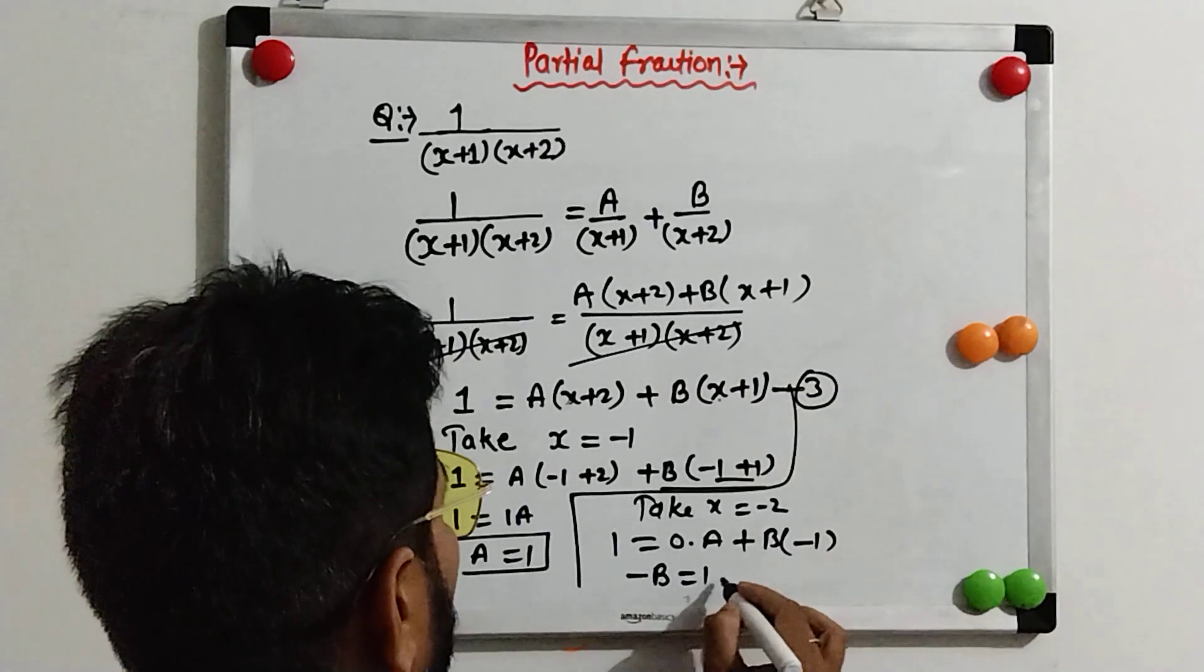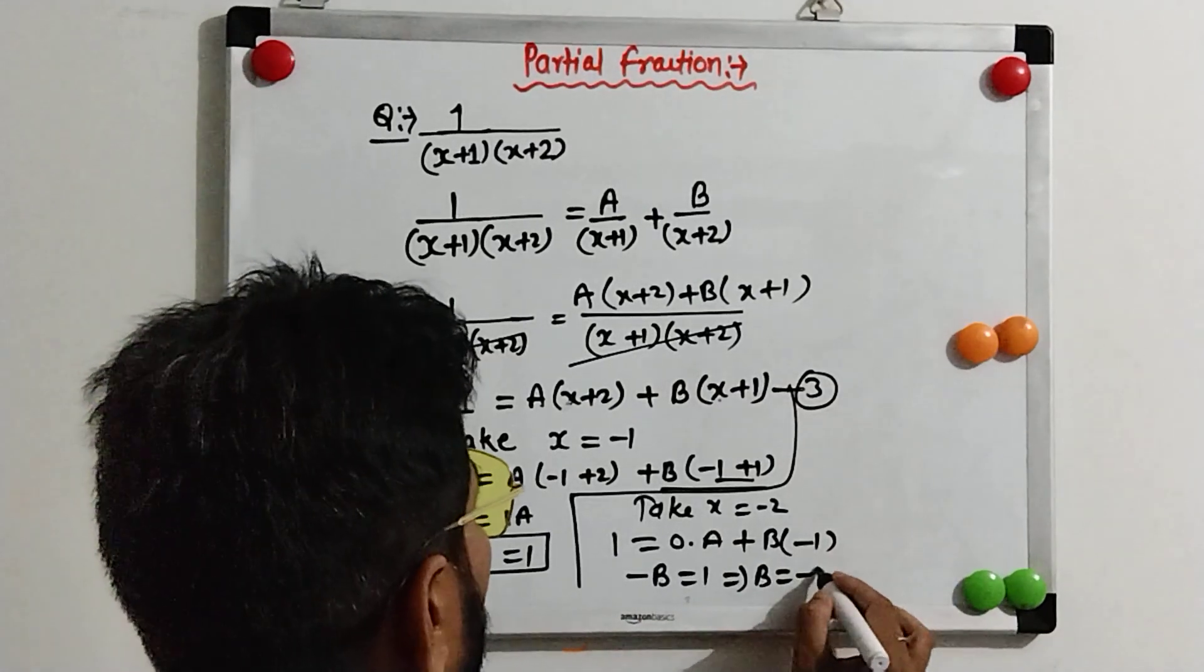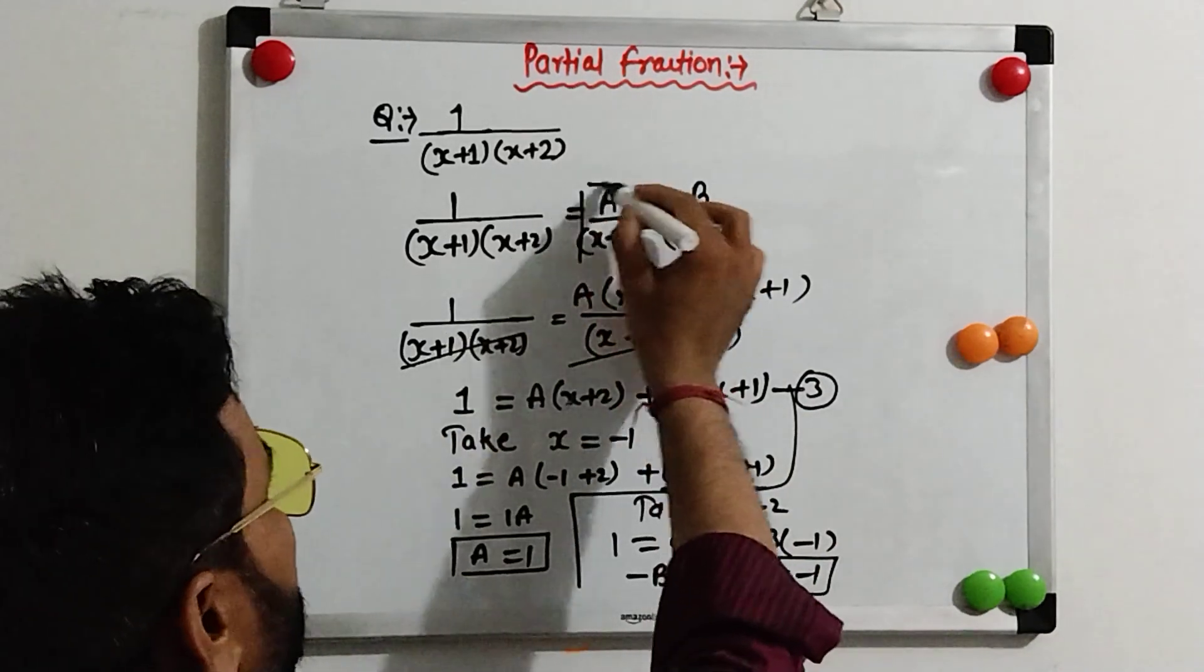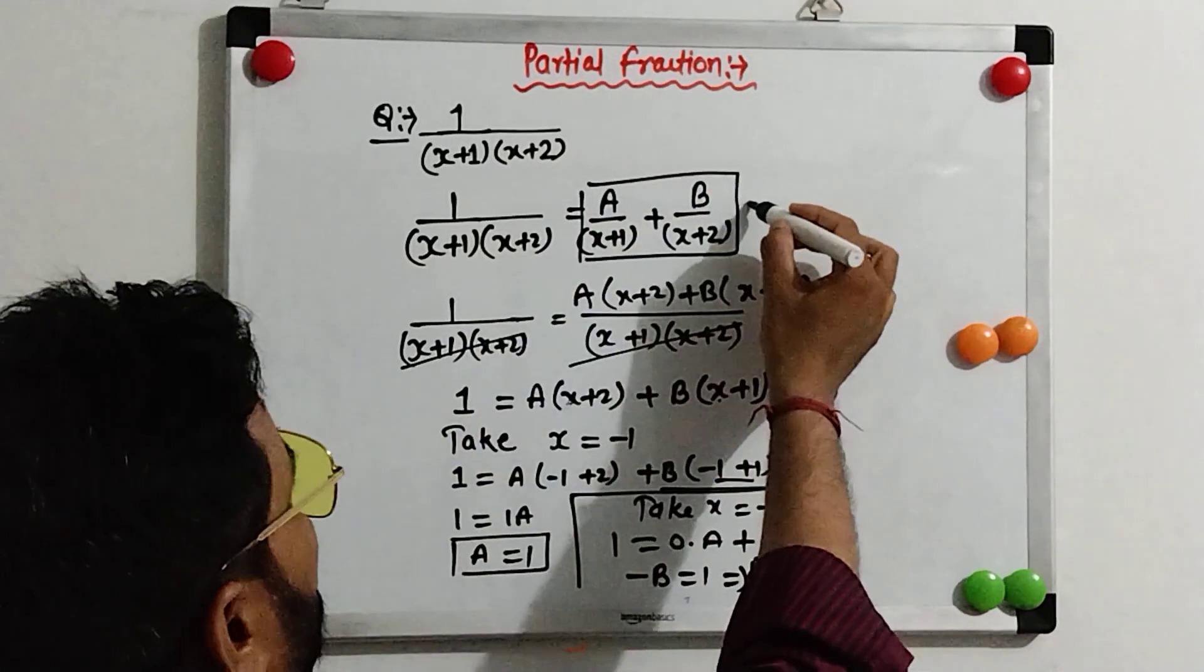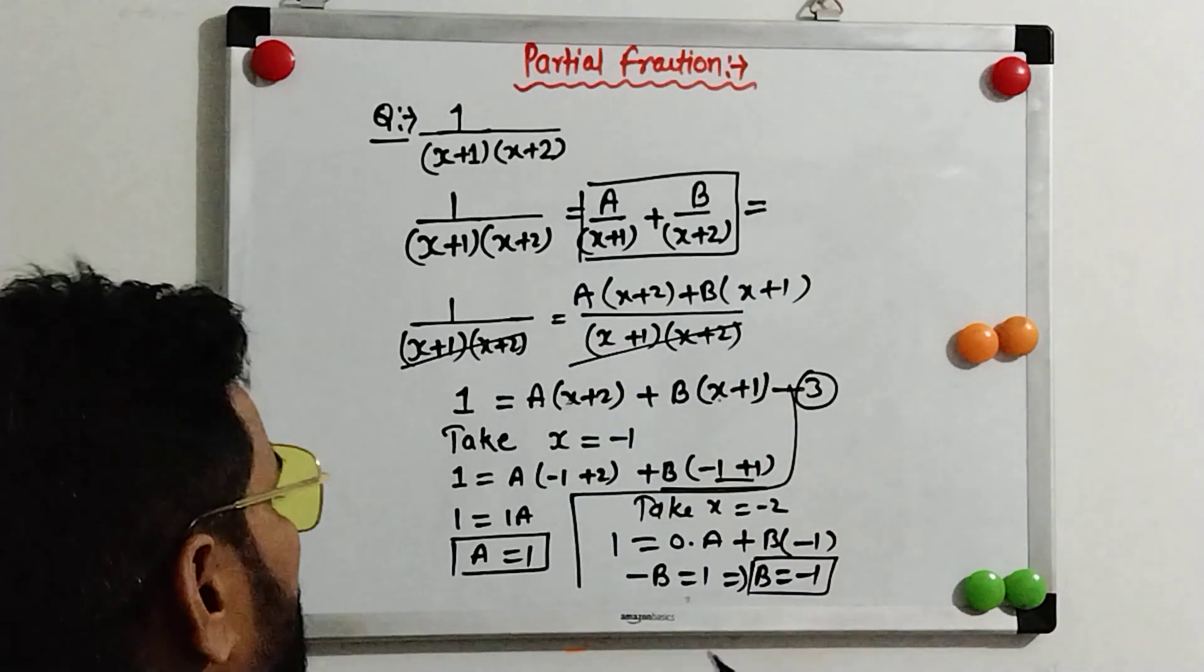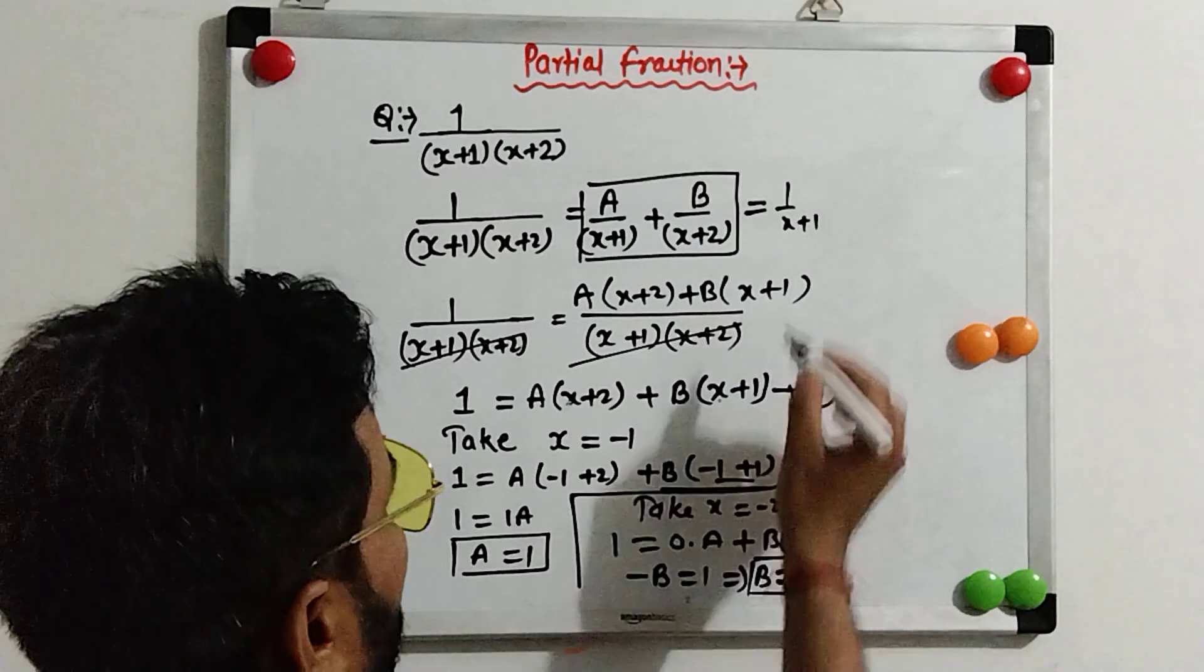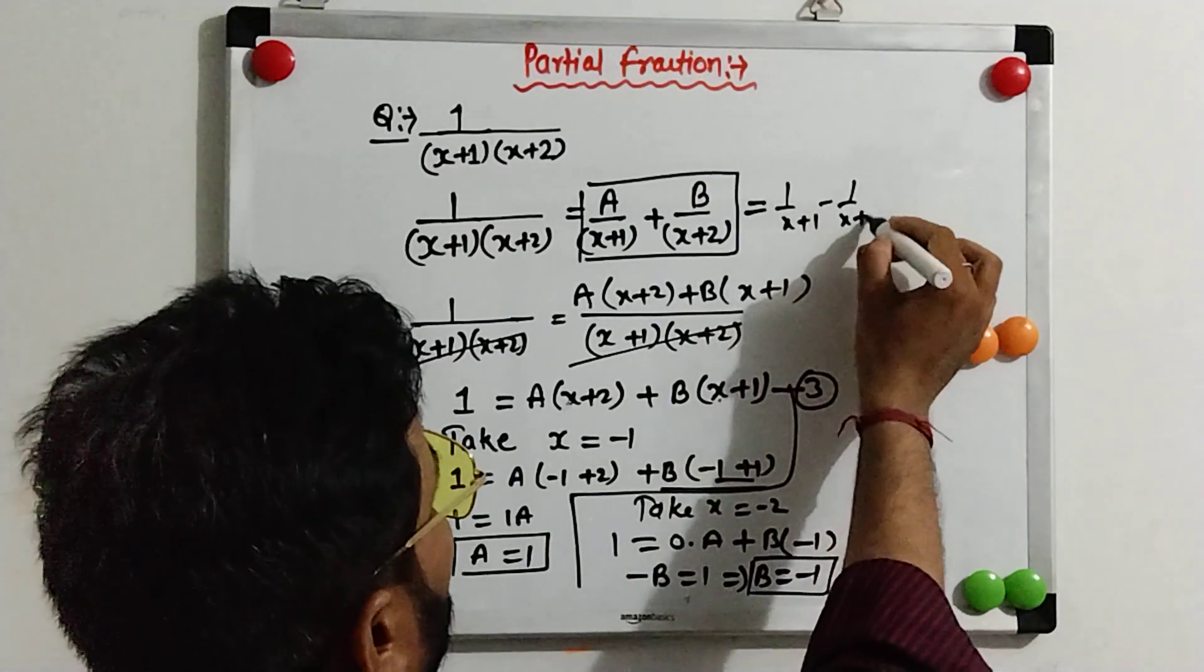So, -B equals 1, therefore B equals -1. This fraction becomes 1/(x+1) minus 1/(x+2).